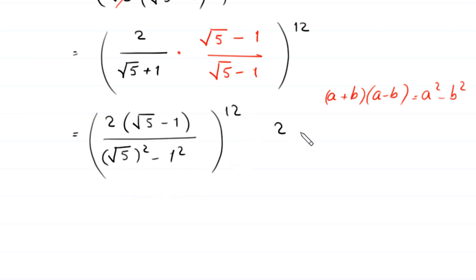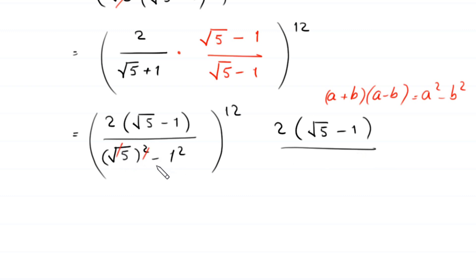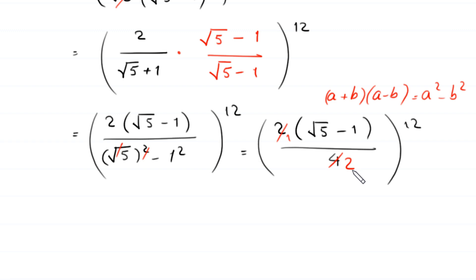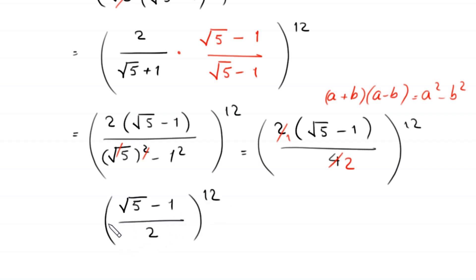Next, 2 times square root of 5 minus 1 divided by square root of 5 squared minus 1 squared: the square cancels with the square root, giving 5 minus 1 equals 4. So we have 2 times square root of 5 minus 1 over 4, which simplifies to square root of 5 minus 1 divided by 2, whole to the power 12.